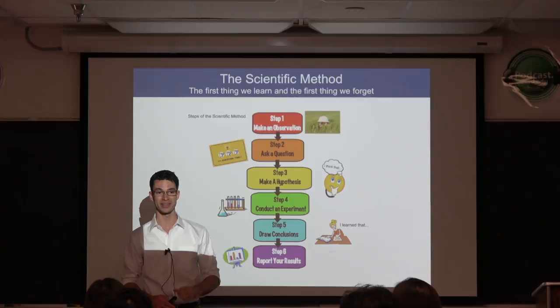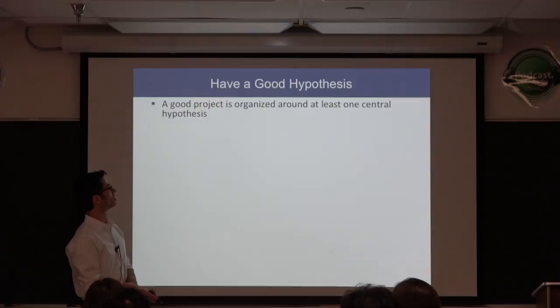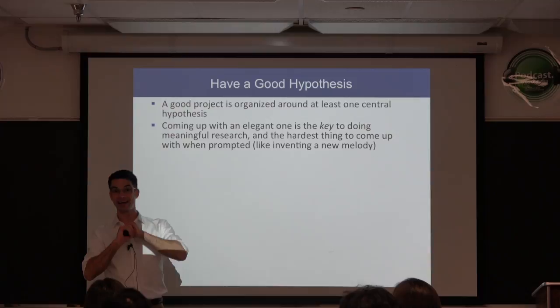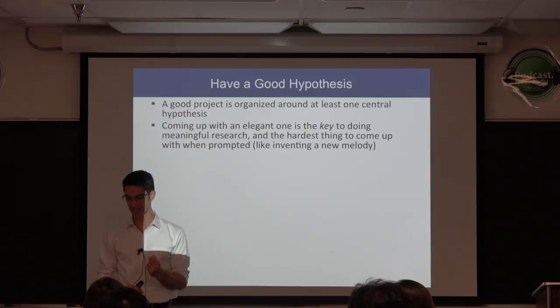A good project is organized around at least one solid hypothesis, and perhaps some peripheral hypotheses. Coming up with an elegant hypothesis is the key to doing good research, but it's also the hardest thing to come up with when prompted.